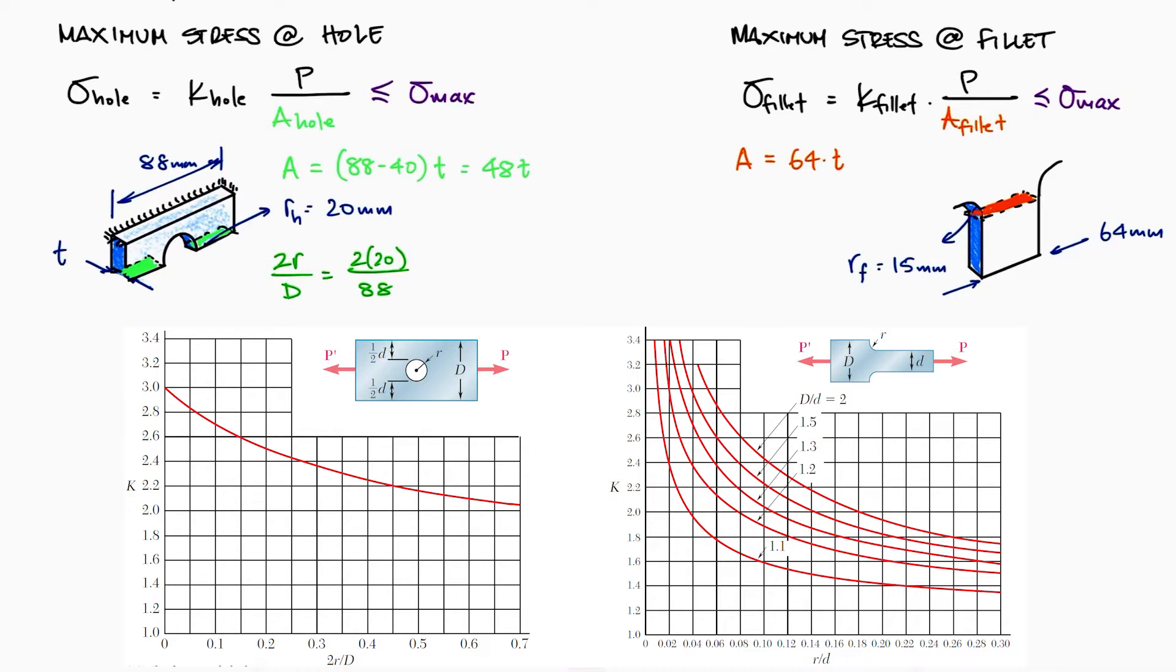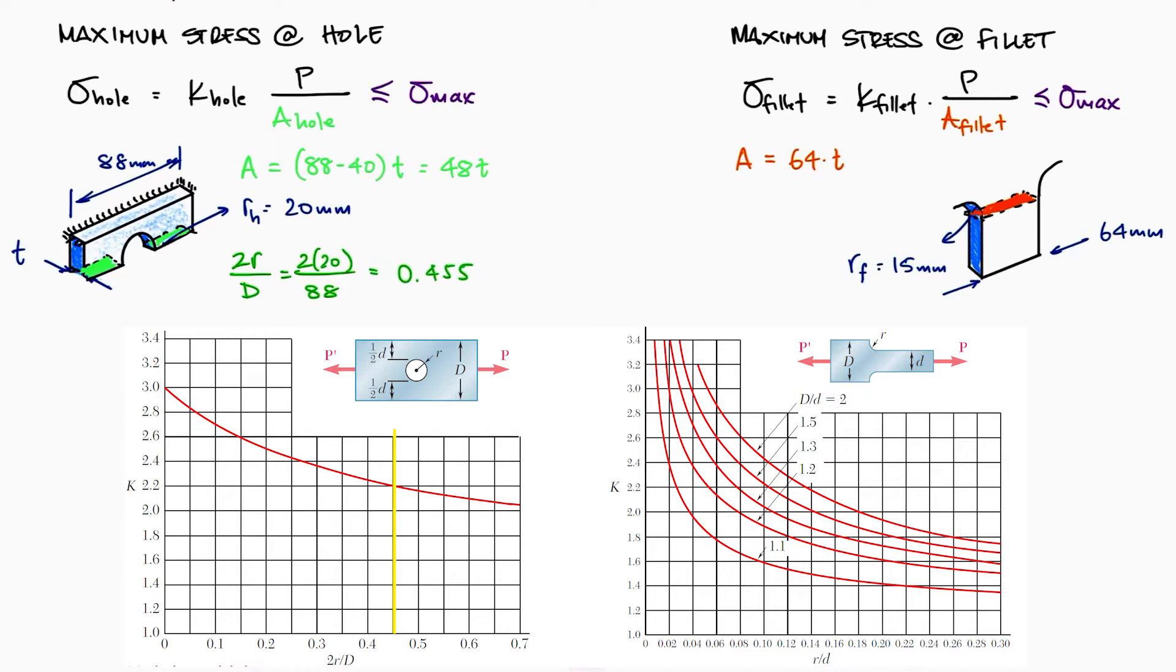The diameter of the hole to the plate width ratio will give us an x-axis value of 0.455 for the stress concentration chart, which yields a stress concentration factor K of almost exactly 2.2.